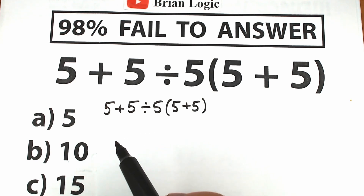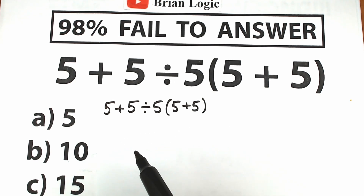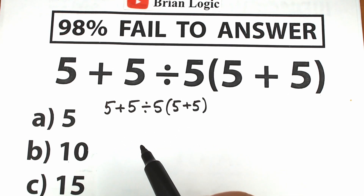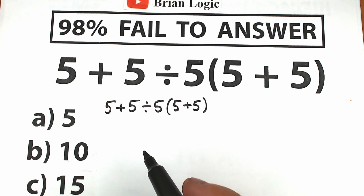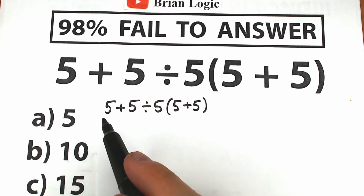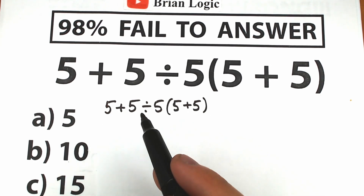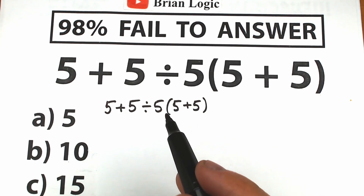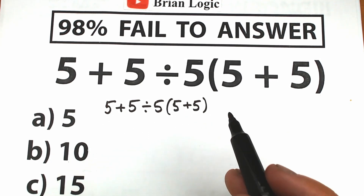We can't solve this challenge randomly — that's a really bad thing in terms of math. We should know the correct order to do this problem, because order matters not only in math. For example, in biology and chemistry we should know the correct law and correct property. So according to this question, let's learn about order of operations.